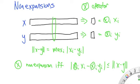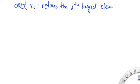In other words, summarizing the vectors doesn't make them any further apart than they were before. So let's take an operator, ord superscript j, which takes a vector and returns the jth largest element of x.